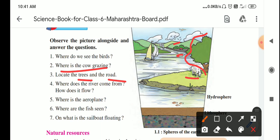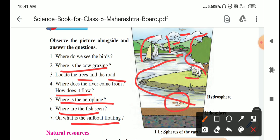Where does the river come from? How does it flow? The river comes from the mountain side, from the mountains and it flows anywhere. Where is the aeroplane? We can see the aeroplane here in the sky. Where are the fish seen? The fishes are in the river. On what is the sailboat floating? We can see the sailboat is floating on the river.